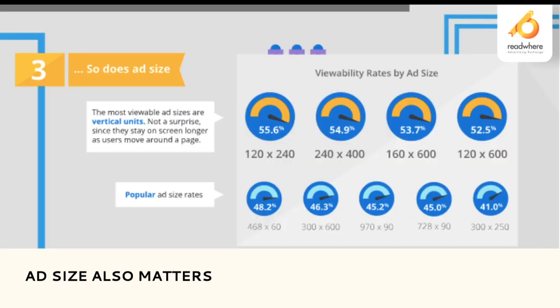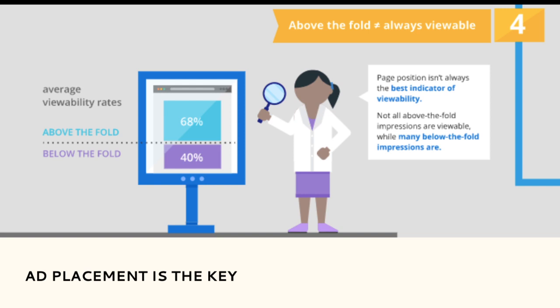Size matters significantly for viewability. Vertical ad units have better viewability compared to horizontal ones because of their vertical length — they can be displayed across the first fold before the user reaches the second fold, so the time spent viewing them is much higher. Recommended sizes for better viewability are 120×240, 240×400, 160×600, and 120×600.